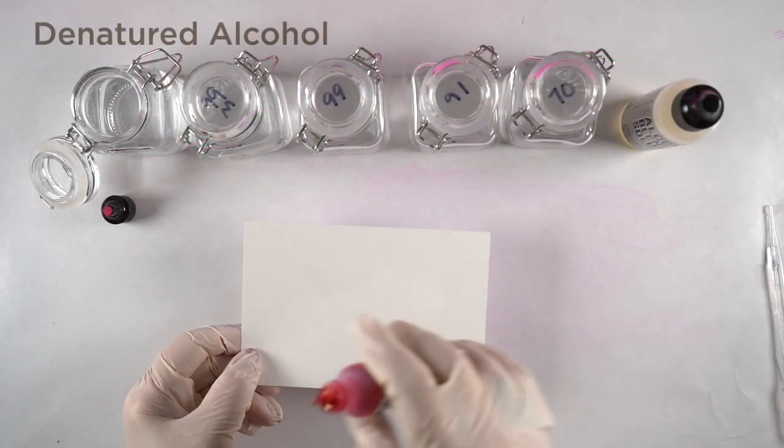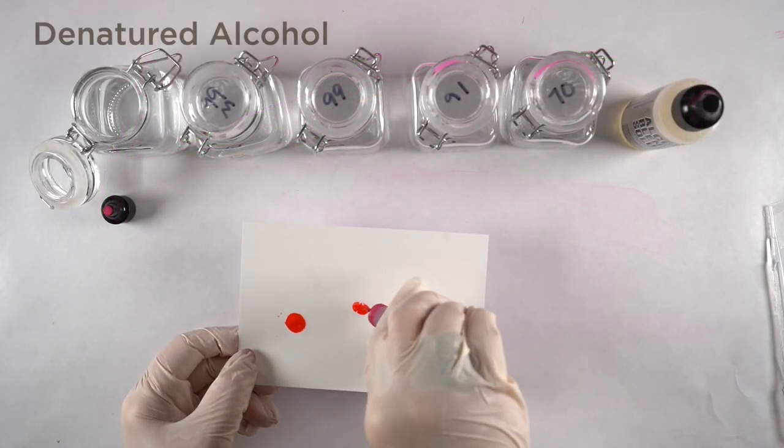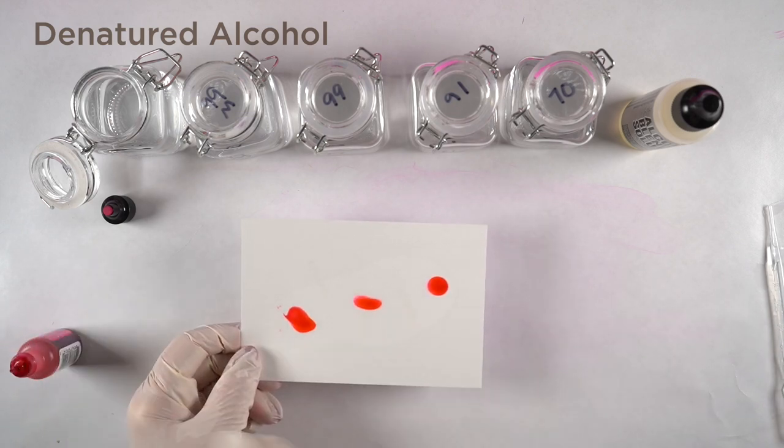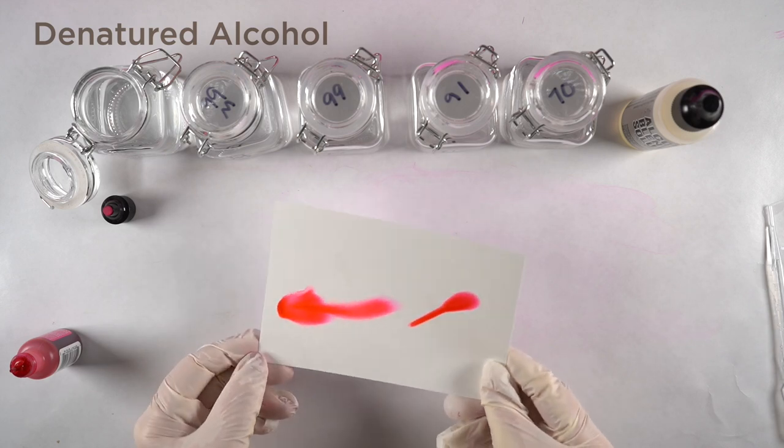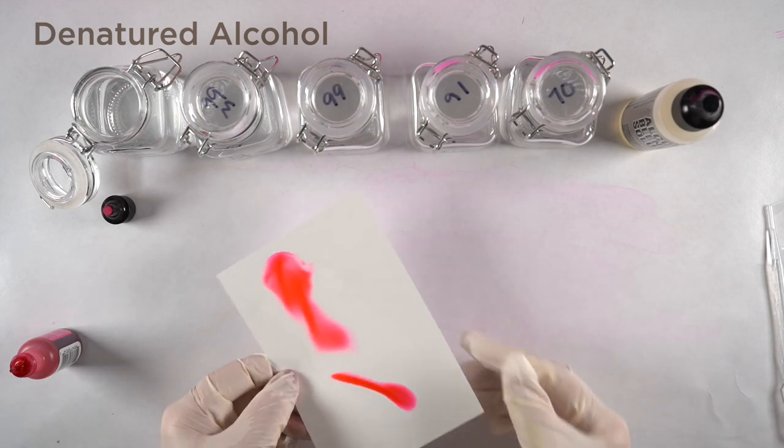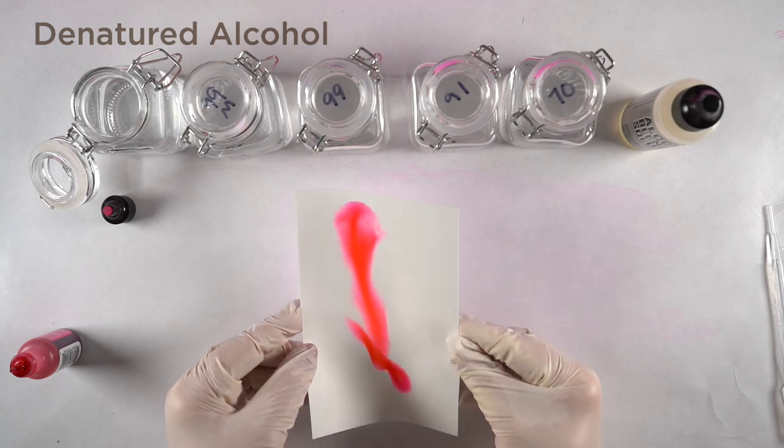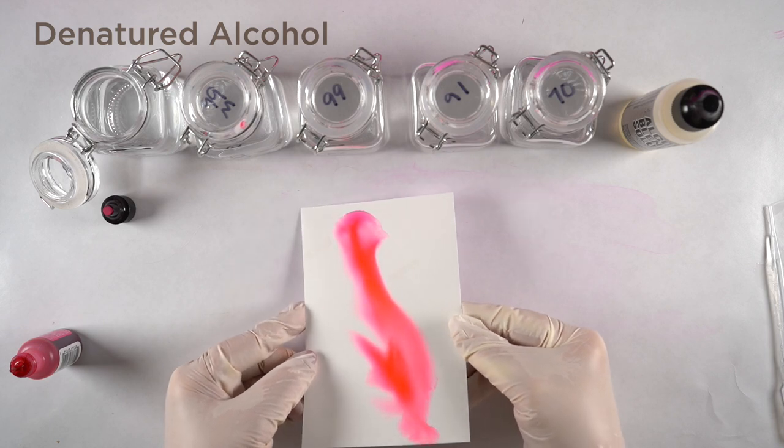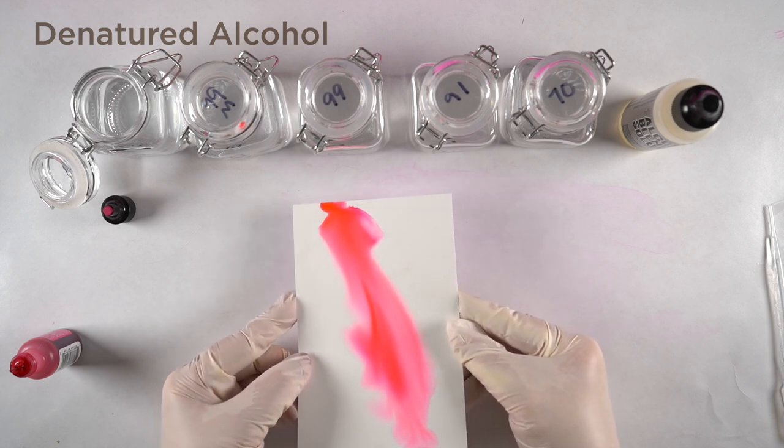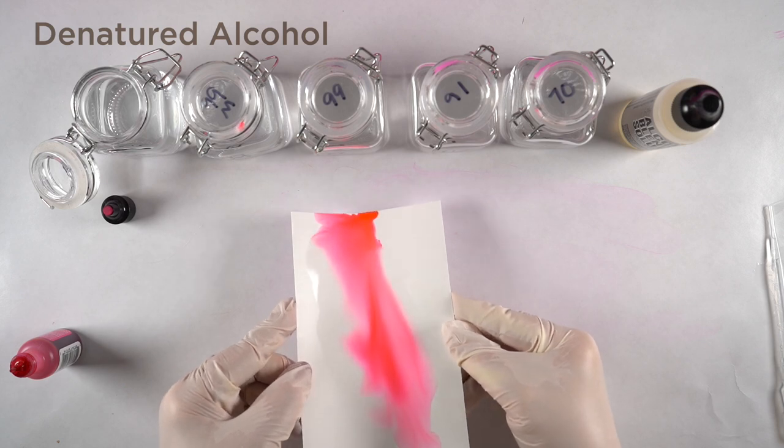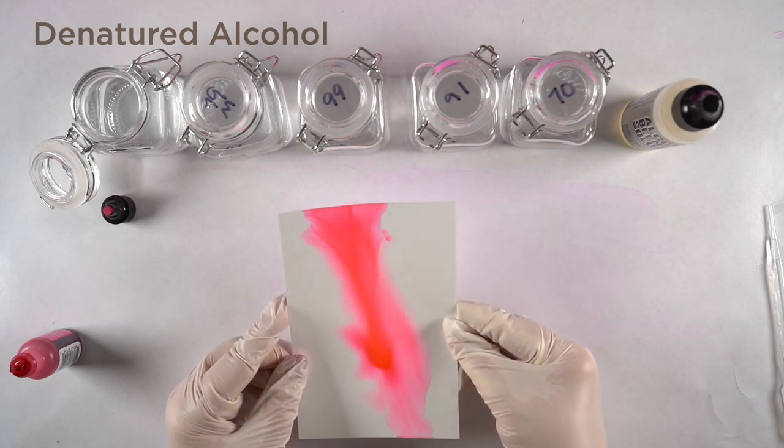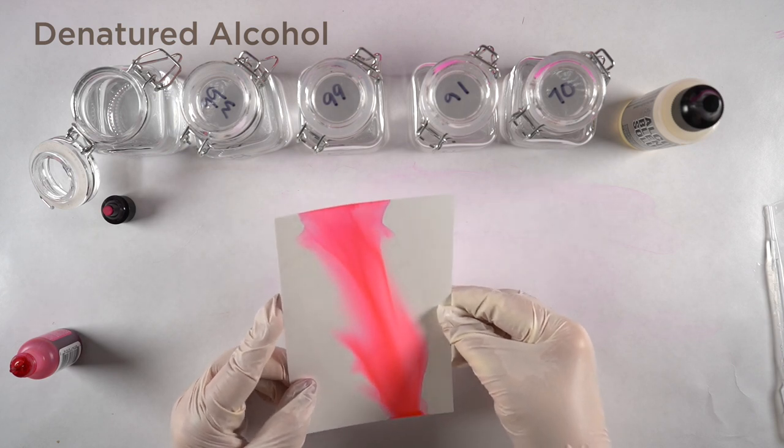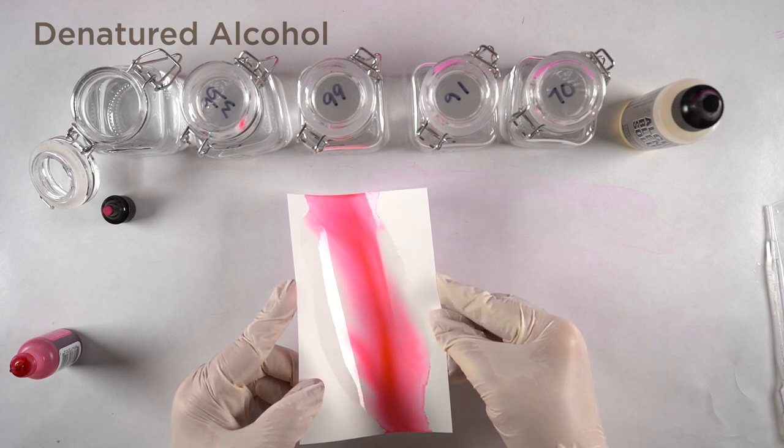The last of the ones that are in the little bottles is the denatured alcohol, and this one took only two minutes and 36 seconds to dry. Two minutes and 36 seconds—that is compared with the whole seven minutes of the 99%. This one apparently has even less water in it.